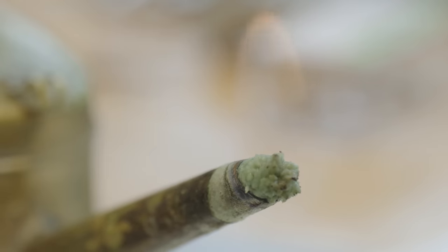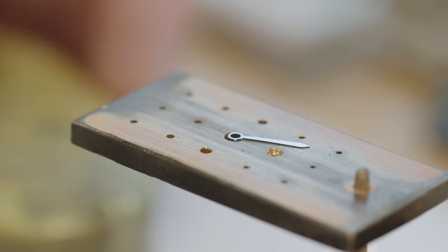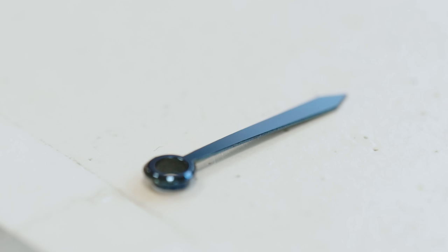The heat bluing of the hands, which can fade with time, is reintroduced in exactly the same way as it was first applied. This protects the hands from corrosion as well as giving a beautiful blue hue.